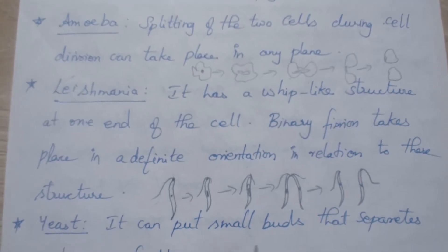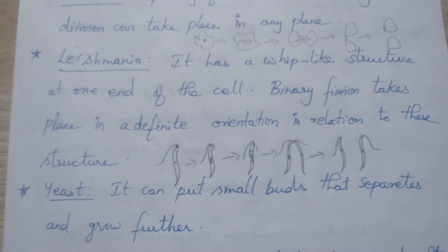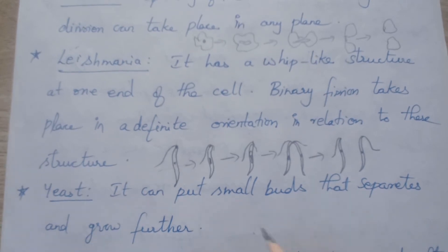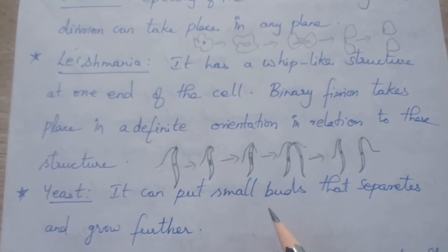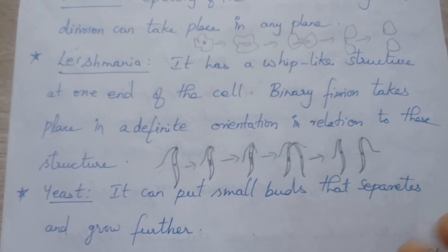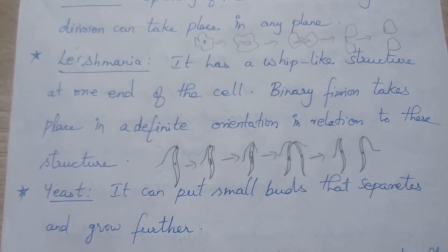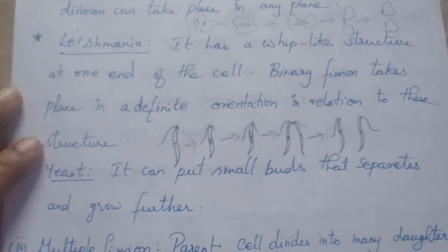In yeast, it can put out small buds that separate and grow further. Yeast will have a small bud at the sides; it raises, then the bud will separate and grow as a separate new organism.